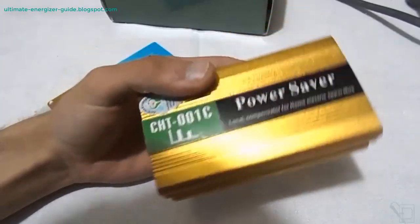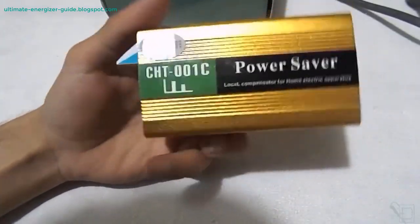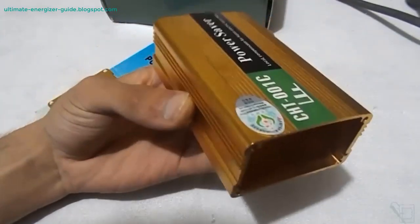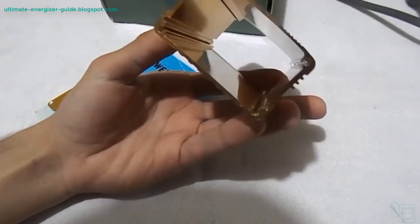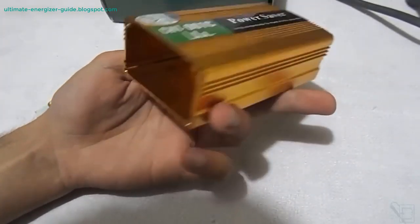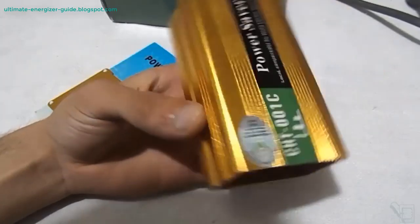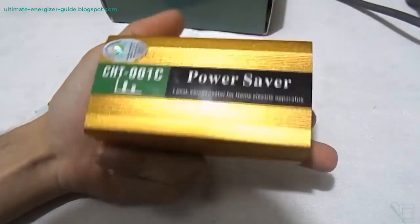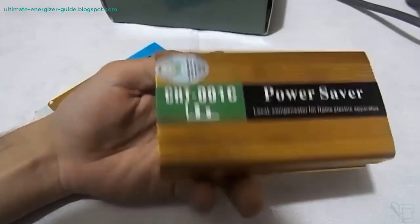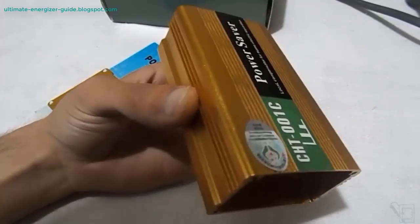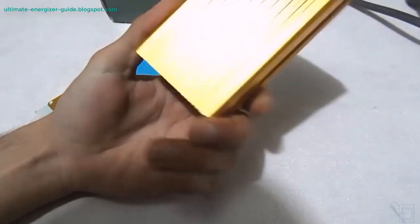The technology behind the electricity saving box: at its core, the electricity saving box is often marketed as a device that can reduce your energy consumption, leading to lower electricity bills. The mechanism through which it purportedly achieves this varies, but many claims are centered around the idea of power factor correction, harmonic filtering, and energy storage.